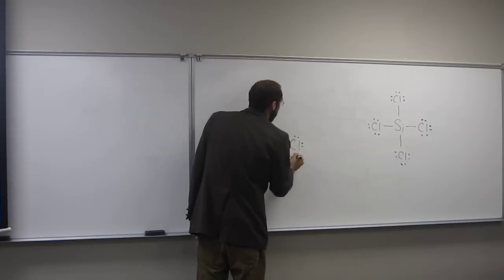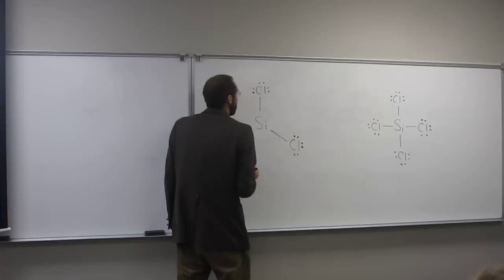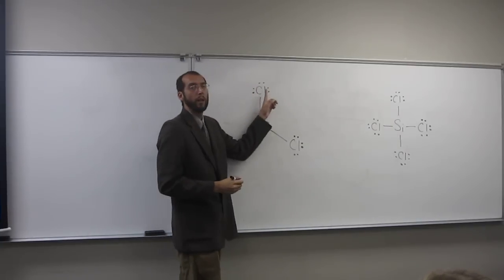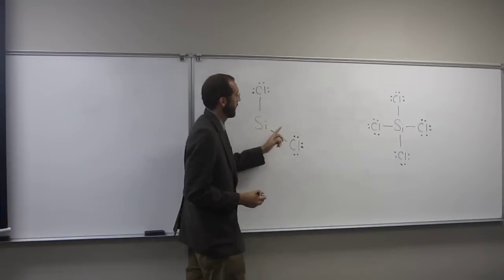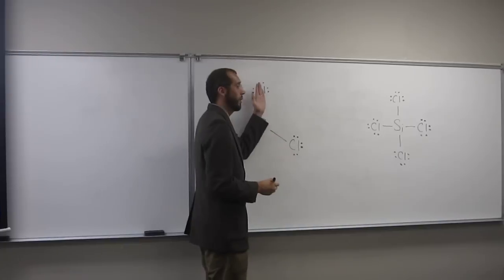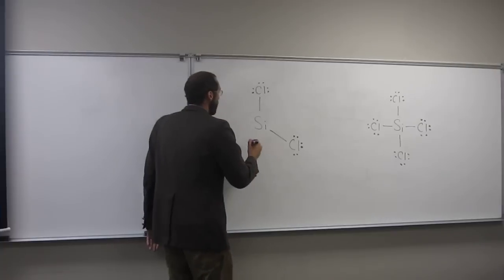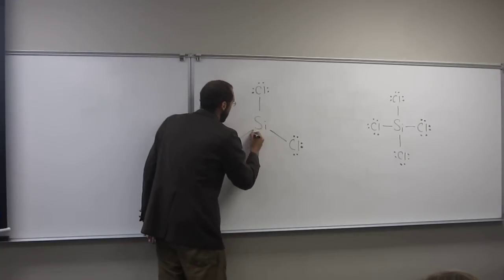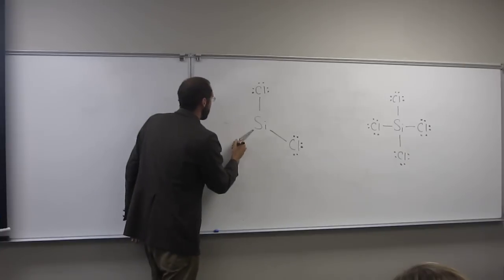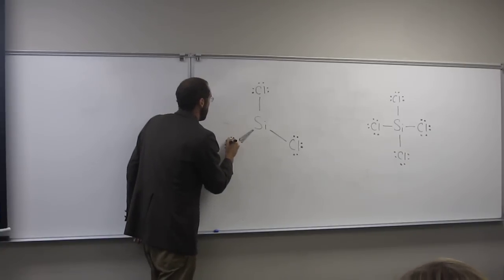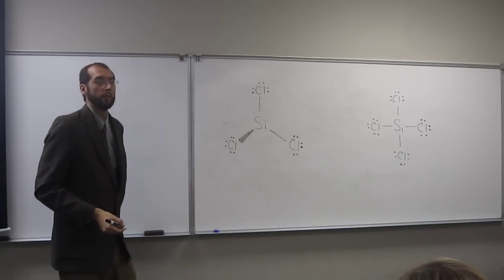So, we're going to draw what the actual structure of this molecule looks like. And, again, this is still a three-dimensional representation on a two-dimensional board. But, whenever you've got bonds that are just straight lines, like that, those mean that they're in the plane of the board. When you've got something that looks like this, we call that a wedge, a wedged bond. So, that means it's coming towards us.